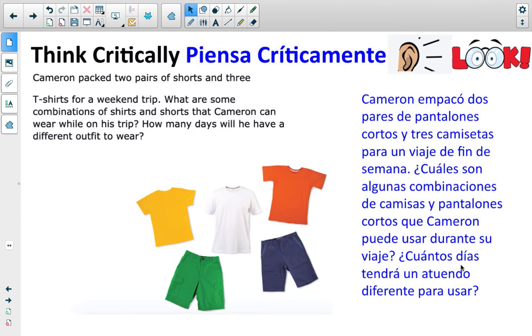We're going to start with looking at this question, and we're going to come back to this at the end of the lesson. Cameron packed two pairs of shorts, looks like green and blue, and three t-shirts for the weekend trip. Based on the picture, it looks like yellow, white, and orange. What are some combinations of shirts and shorts that Cameron can wear while on his trip? And how many days will he have a different outfit to wear? We're going to come back to this at the end.